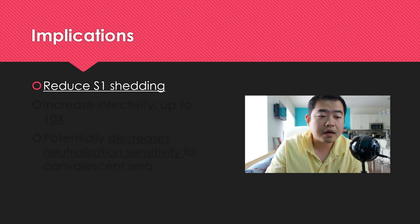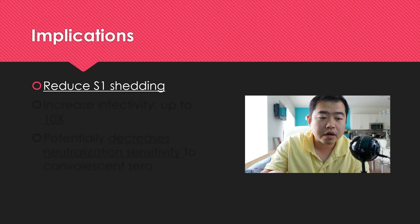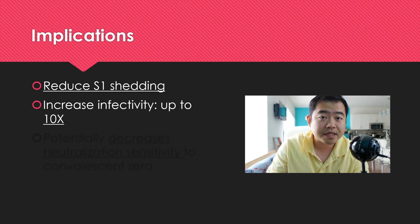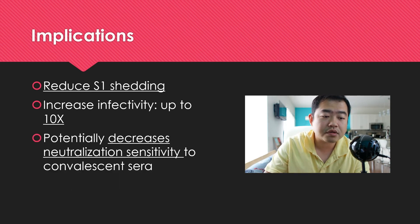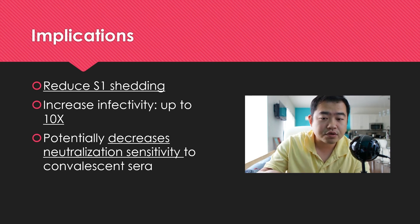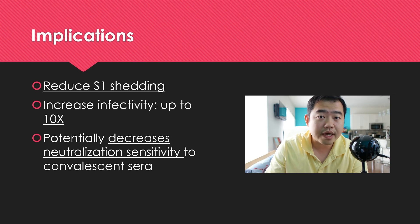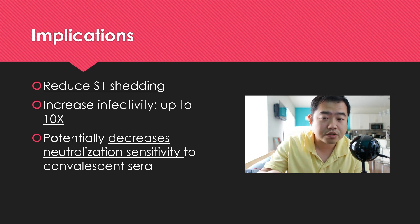So what are the implications of this specific mutation? First, this mutation has been shown to reduce S1 subunit shedding, making it more stable on the viral particle. A more stable spike protein leads to increased infectivity — up to 9 to 10 times compared to the original version without this mutation. Another implication includes potentially decreased neutralization sensitivity to convalescent sera. This is one of the more recent findings that has not been peer-reviewed yet — it is on preprint from a research group. This implication is huge and also helps explain why there are far more spread infections in Europe and the U.S. compared to parts of Asia — that could be the potential reason.